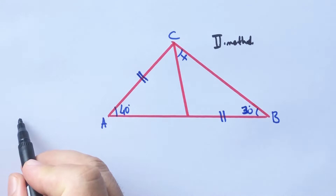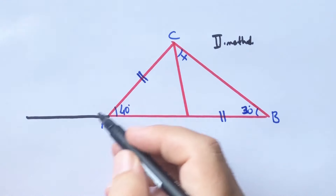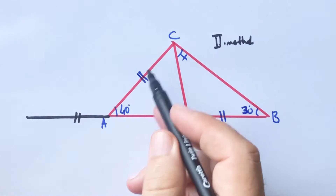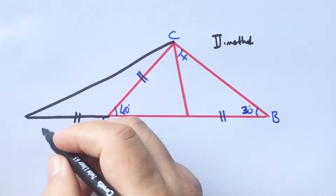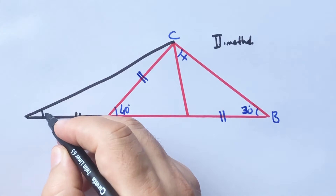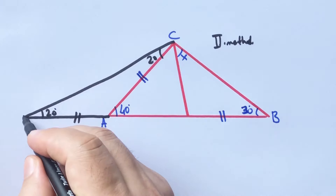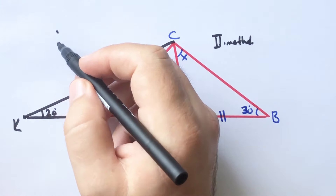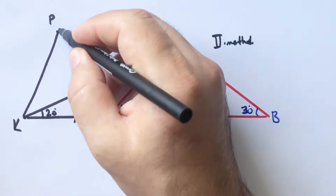Now let's calculate the missing angle using a second method. If we extend this side as long as this length, we get an isosceles triangle, so these base angles must be 20 degrees. Let's call this point K, and if we create an equilateral triangle, let's call this point P.